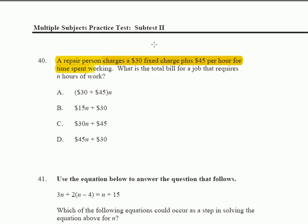Just for the repair person to show up at your house, it's going to be a $30 fee — just for showing up — plus $45 per hour. We don't know how many hours that is, so that's going to be our N. So if it were one hour, it would be 30 plus 45 times 1, giving you 75, or 30 plus 45 times 2 hours of work, and so forth.